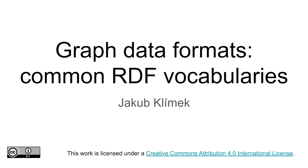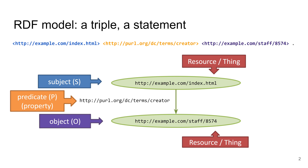Welcome to the next lecture on graph data formats. Today we will talk about common RDF vocabularies. As a reminder, the RDF data model is a graph data model where we have a set of triples or statements, and each of those triples or statements has three parts: a subject, a predicate, and an object. Last time we talked about SPARQL, and the lecture before we talked about the RDF data model itself and some of its serializations.